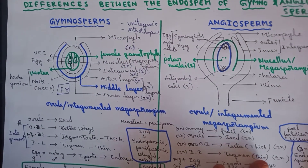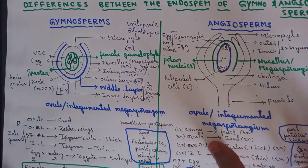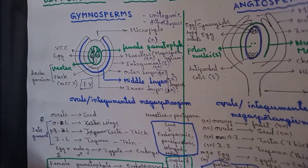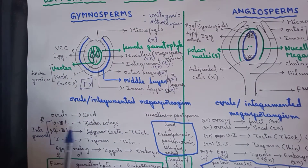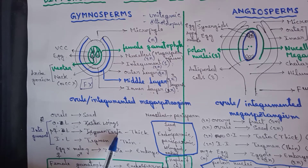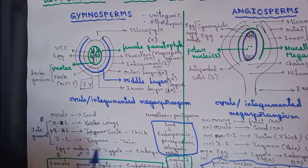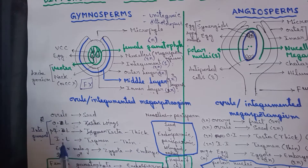After fertilization, the ovule develops into a seed. The outer layer of the integument develops into wings of the seed. The middle layer of the integument develops into testa of the seed — the outer layer of the seed coat, which is thick. The inner layer of the integument develops into tegmen — the inner layer of the seed coat, which is thin.